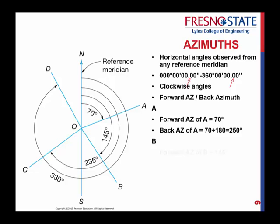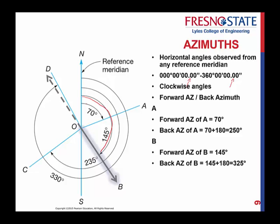Now let's look at B. B has a forward azimuth — the angle measured here is 145 degrees. For the back azimuth, we go exactly the opposite direction, adding 180. So 145 plus 180 equals 325 degrees as my overall angle.